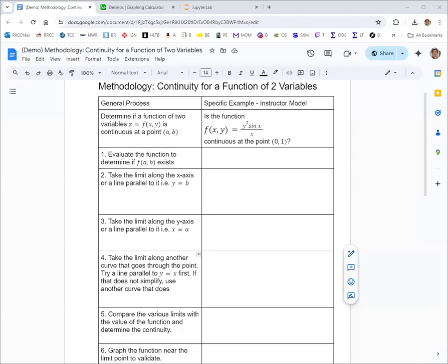We're going to take another look at functions of two variables and apply the process for determining continuity at a point. This is very similar to continuity of a function of one variable where you look at the value of the function, the limit, and compare if they match. For continuity, you need the function defined, the limit to exist, and those two to match up.